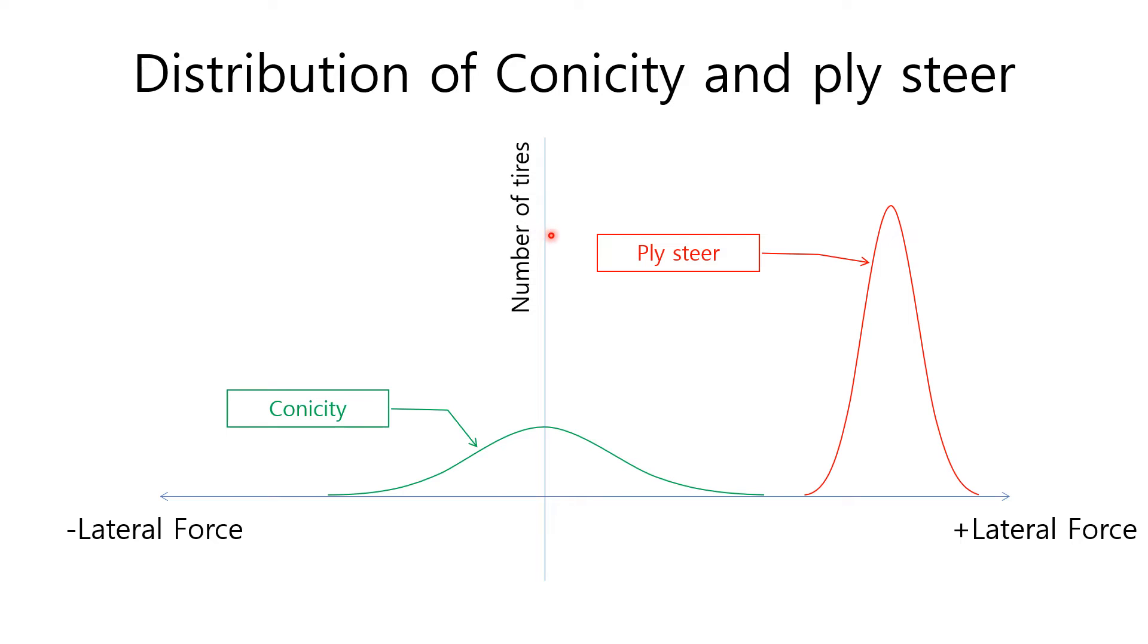This graph shows both distributions of Ply Steer and conicity altogether. Average lateral force due to conicity distribution is near to zero, but the standard deviation goes bigger than that of Ply Steer.